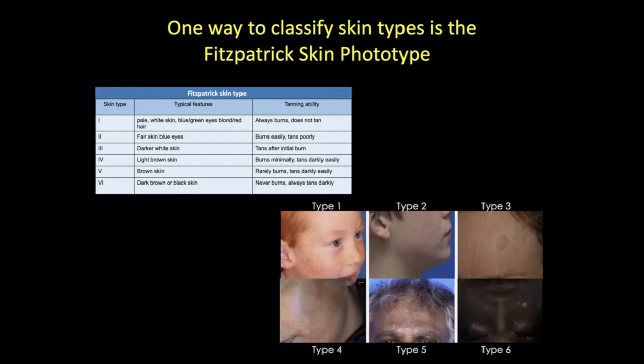Here are some images representing the six different phototypes. For example, here's a type one with pale or white skin that burns easily and tans slowly, if at all. It needs more protection against sun exposure.